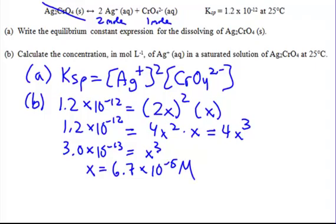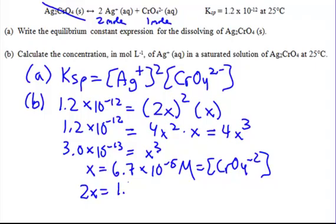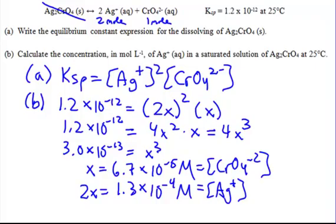We end up getting X equal to 6.7 times 10 to the negative 5th molar. X is the chromate ion concentration. Silver is not X — it's 2 times X, which is 1.3 times 10 to the negative 4th molar. That is your silver concentration in moles per liter. That's a Ksp expression — they look exactly the same every single time.